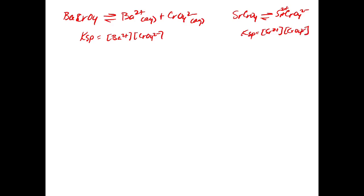From the textbook, the KSP for barium chromate is 1.2×10⁻¹⁰, and for strontium chromate it is 3.5×10⁻⁵. So we know that the solubility should be much higher for strontium chromate than for barium chromate, because strontium has a much higher KSP.